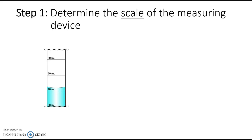To record the correct number of significant figures with your measurements, you have to determine what the scale is of your measuring device. A measuring device is anything that has lines or increments on it as you go from one line to the next. Examples include graduated cylinders, a thermometer, a ruler, and a beaker — all measuring devices because they have those lines on them.